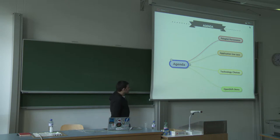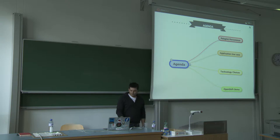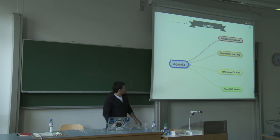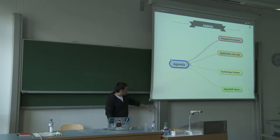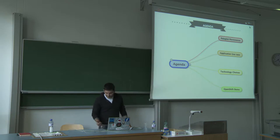The agenda for today: we will start with what Polyglot Persistence is all about and why you need to care about it. We'll look at notable books on the subject. Then we'll take a look at the application we're developing. Third, we'll talk about technology choices — which databases, deployment platform, and language I chose. Finally, I will do a demonstration on Java with OpenShift, which is a platform as a service.